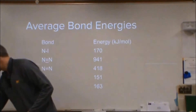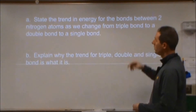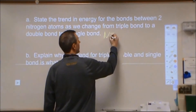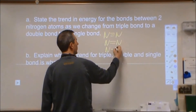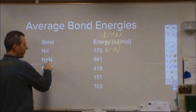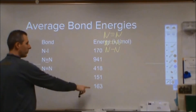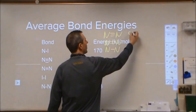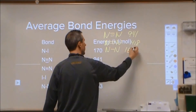Part A asks us to state the trend of energy for bonds between two nitrogen atoms as we change from a triple bond to a double bond to a single bond. The triple bond has an energy of 941, the double bond 418, and the single bond 163. So we're going from 941 to 418 to 163.